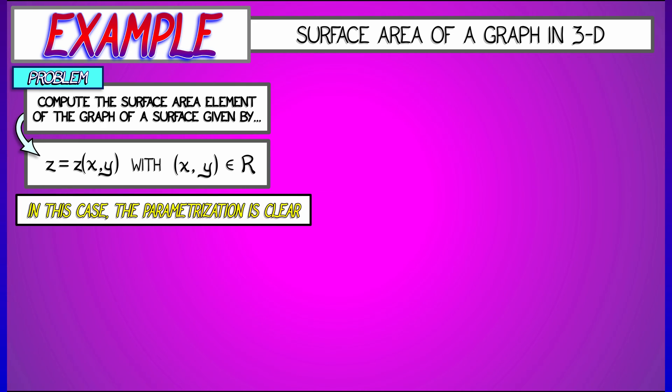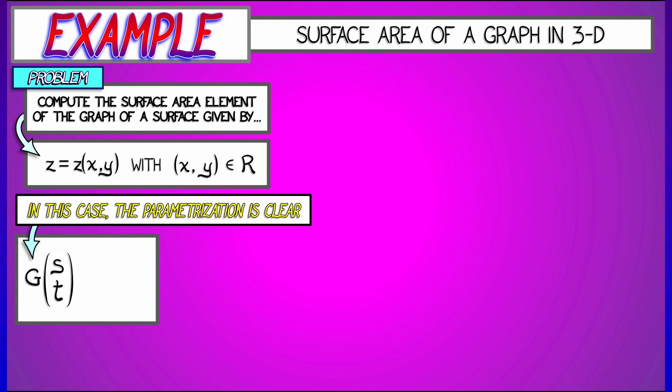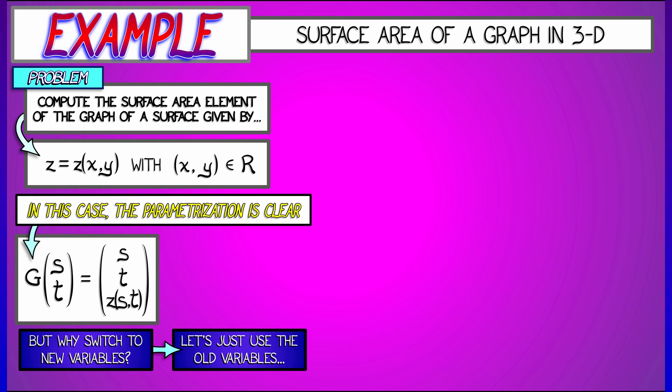Now in this case, parametrizing the surface is really obvious. We can use the simple parametrization where g of s and t is simply s and then t and then z as a function of s and t. It's kind of pedantic to use s and t variables for this.